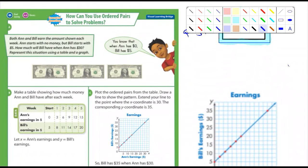It says both Ann and Bill earn the same amount each week. Ann starts with no money, but Bill starts with $5. How much will Bill have earned when Ann has $30? And it says, represent the situation using a table and graph.